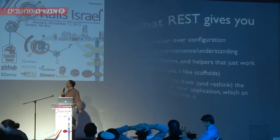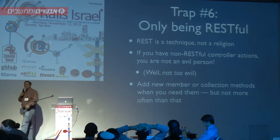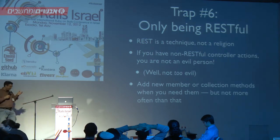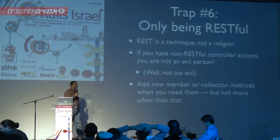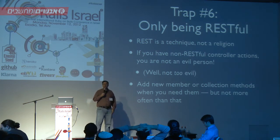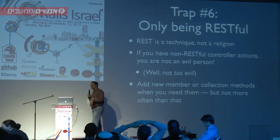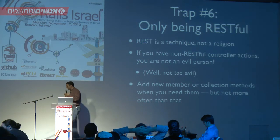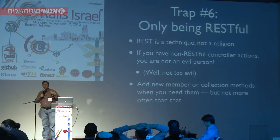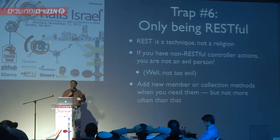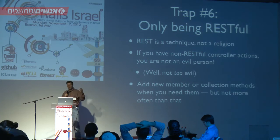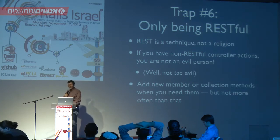The next trap is only being RESTful. Now that I've told you RESTful is great, there are times when it doesn't fit. I've met people who say 'I wish I could write a new method to do this, but it doesn't fit into the RESTful framework.' The fact is, Rails does give you the flexibility — it's pretty easy in your routes file to add either a new member or a new collection method. It's okay to do so, as long as it's not the majority of your application. If it's just a few here and there, that's okay.